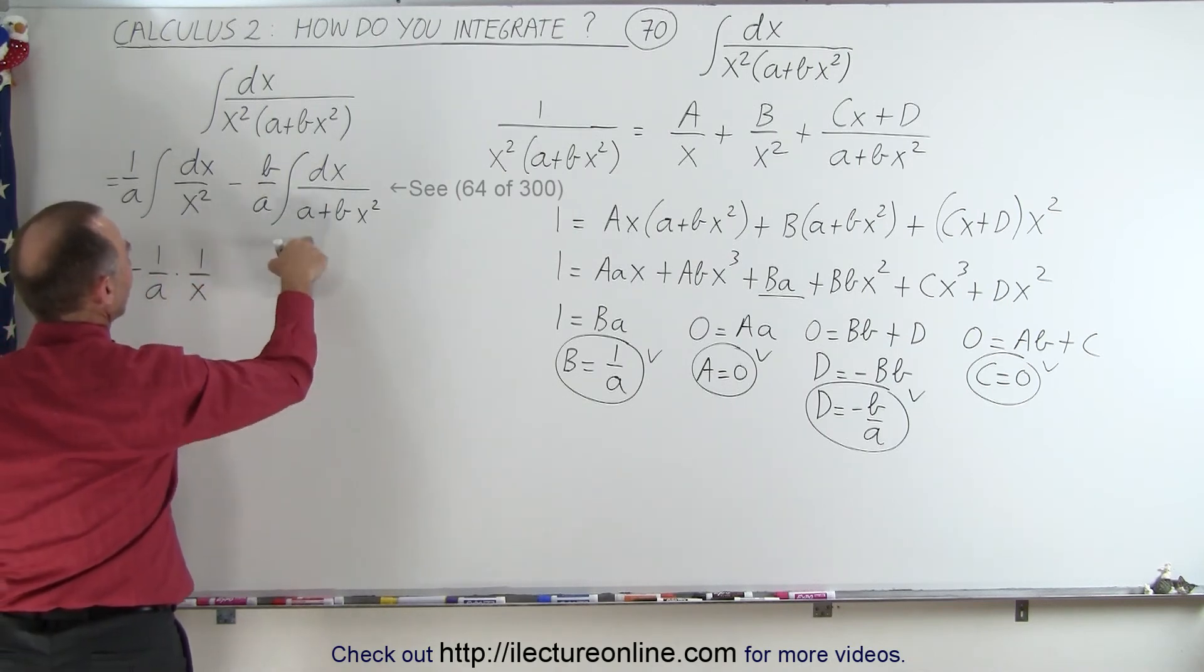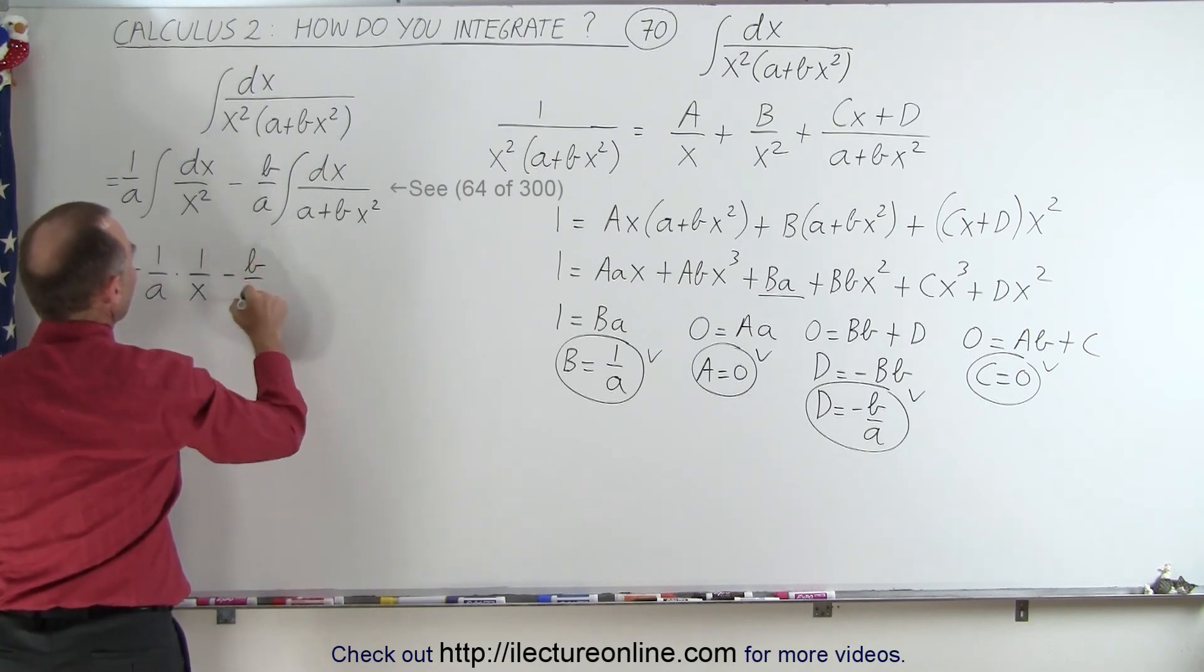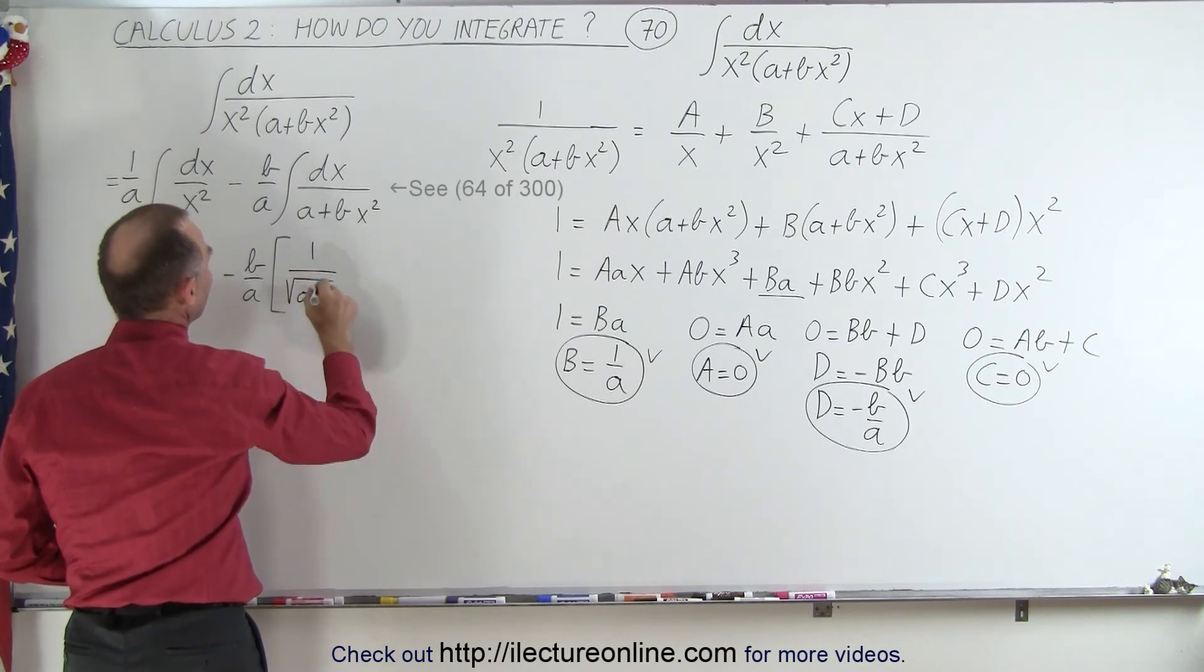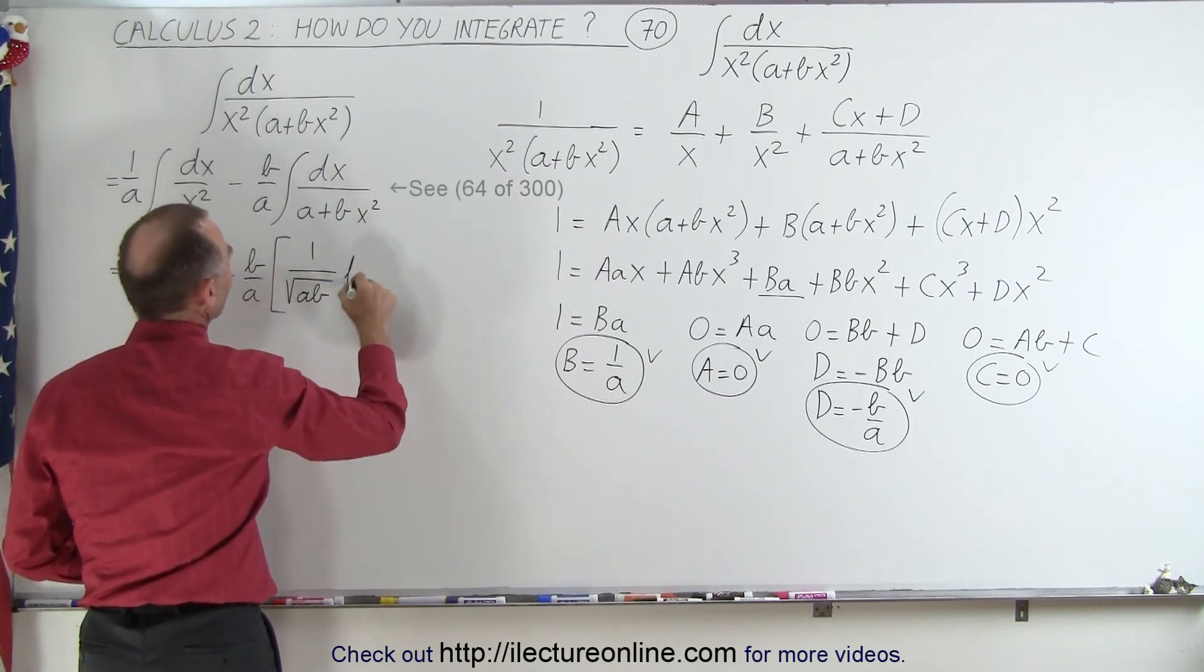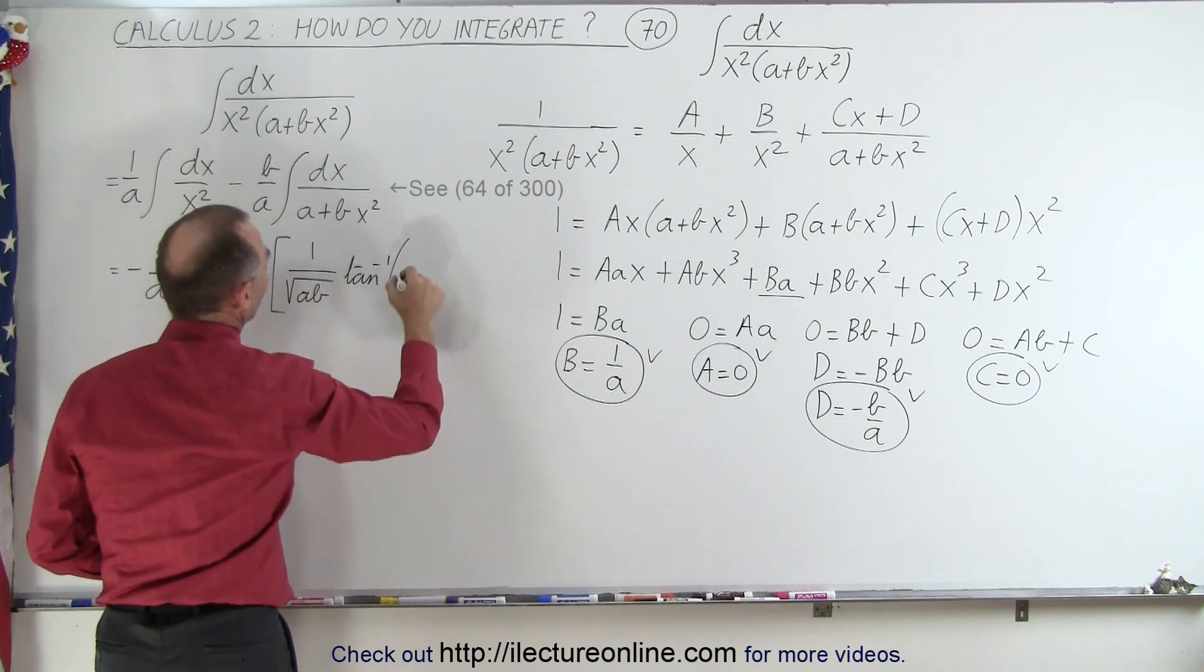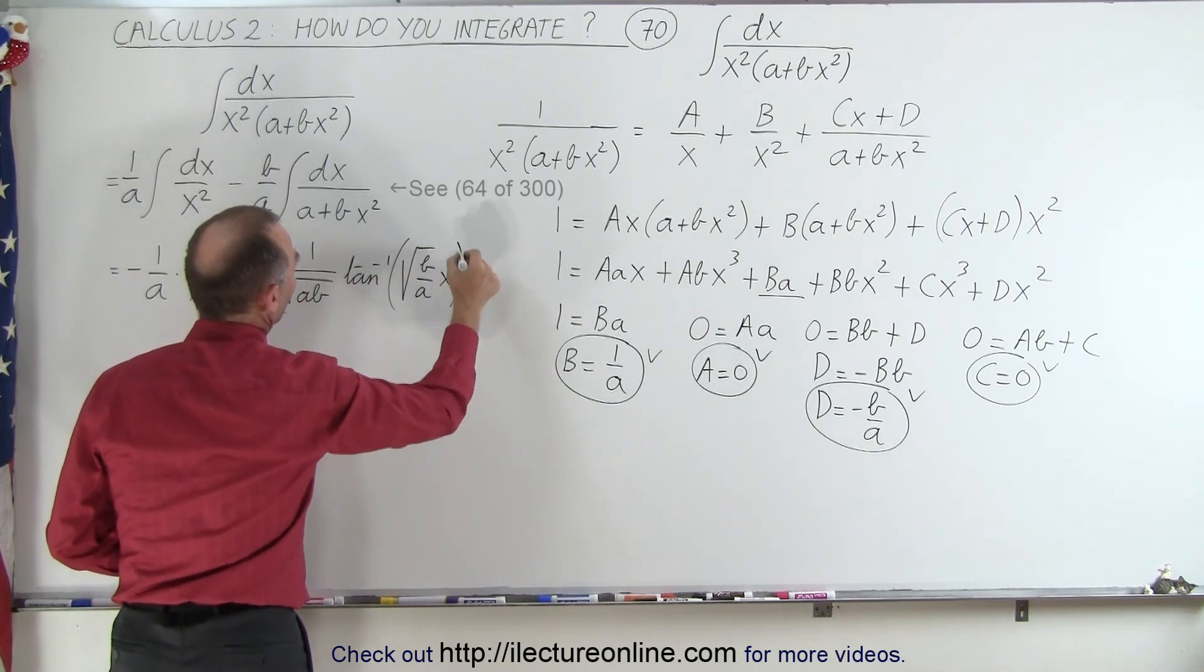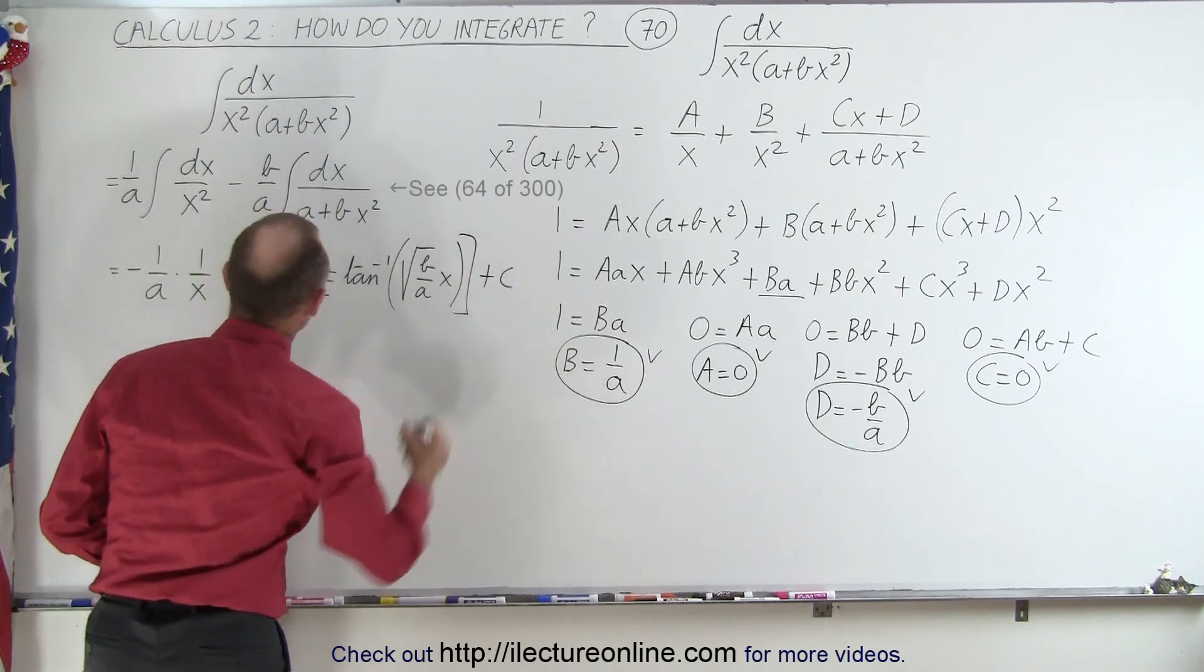And then here we have minus B over a times 1 over the square root of a times B times the inverse tangent of the square root of B over a times x. And then we have a constant of integration.